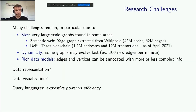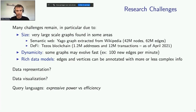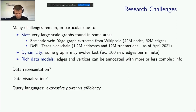There are many research challenges remaining with big graphs at the moment. Among those factors, size plays an important role. We can find very large-scale graphs in several areas, including semantic web, where we can find knowledge graphs with millions of nodes and edges. For instance, the Tezos blockchain has more than 12 million transactions, between more than 1 million addresses. Another factor is dynamicity, because some graphs may evolve very fast — it's common to see at least 100 new transactions per minute on the Tezos blockchain.